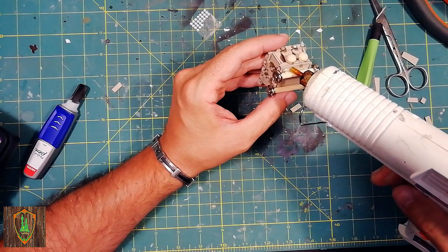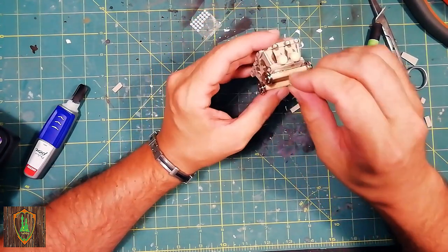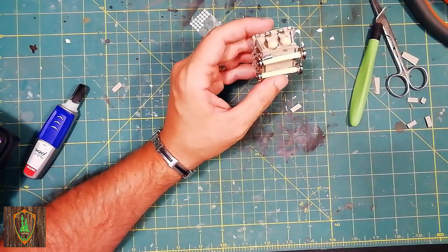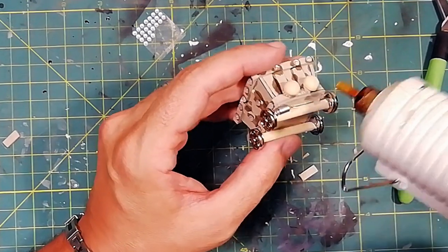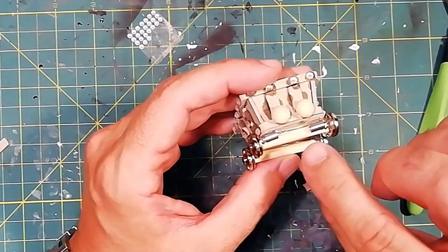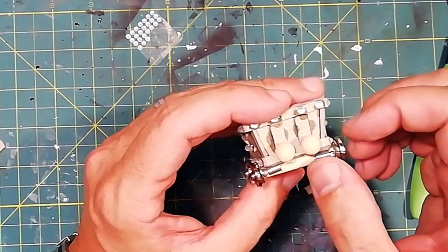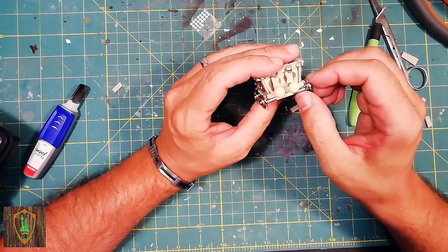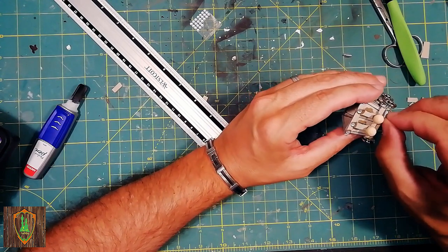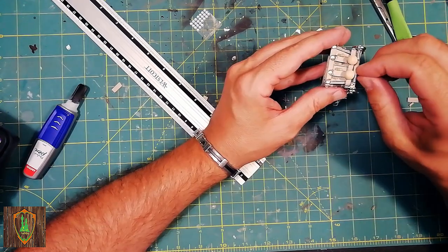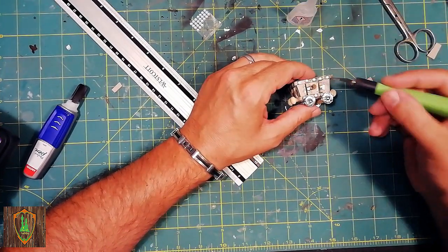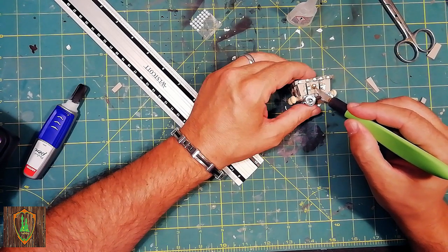Here I insert small bracelet springs to simulate suspensions and some small rings to embellish everything. For this I use super glue for a clean and fast result.